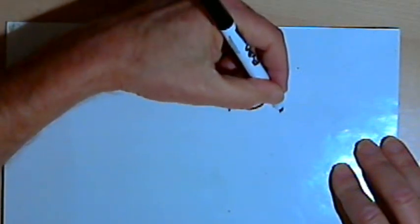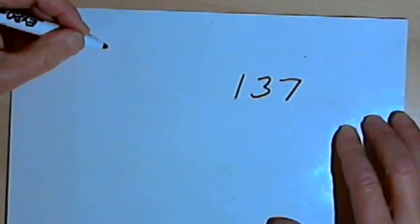So let's say I've got the number 137 and I've got to determine whether it's prime or composite.